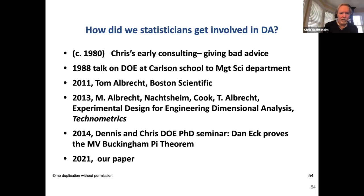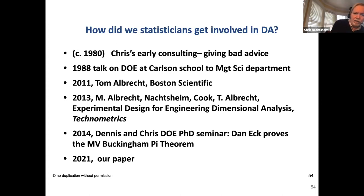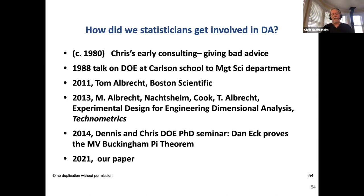This discovery told them statisticians weren't talking to engineers. They published their first paper on experimental design for engineering dimensional analysis in 2013, which also won a Uden Prize. Later, Dennis Cook and Chris were giving a PhD seminar on design, and Dan Eck, as a student, expressed interest in extending the Buckingham Pi theorem to the multivariate case — which he did, leading to their 2021 paper. Dennis Lynn and colleagues at Penn State have also made nice contributions to this area.